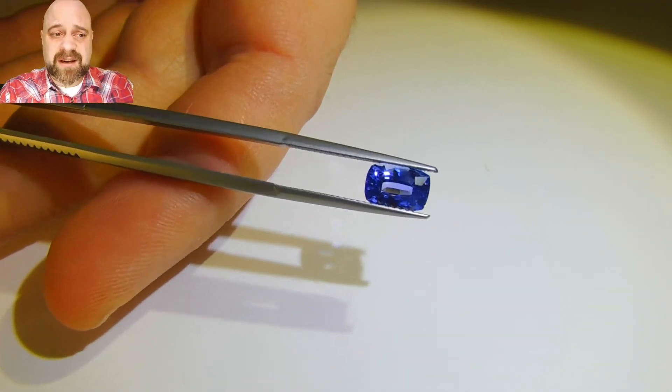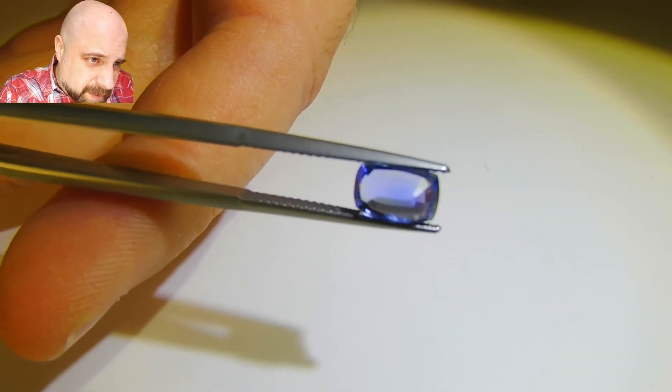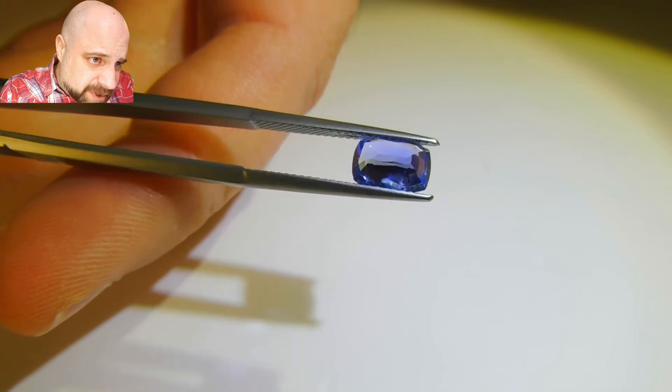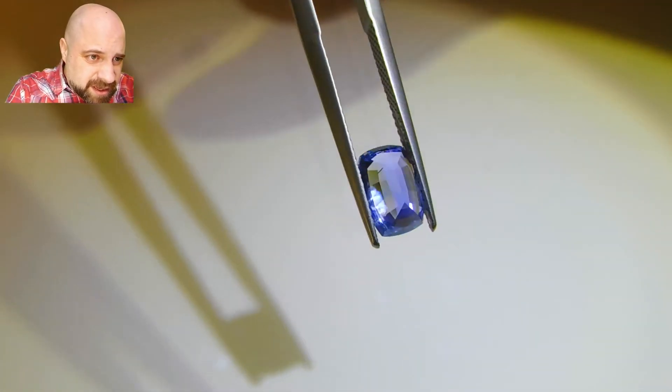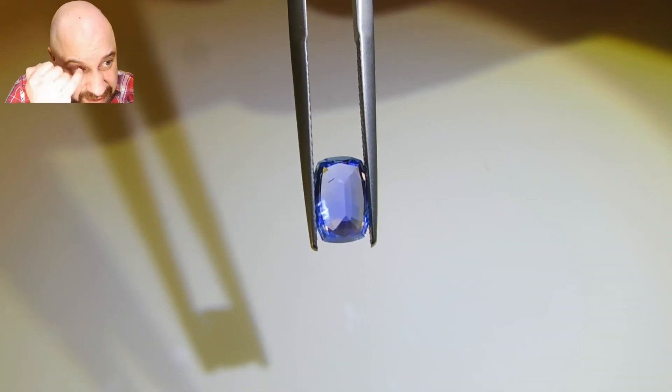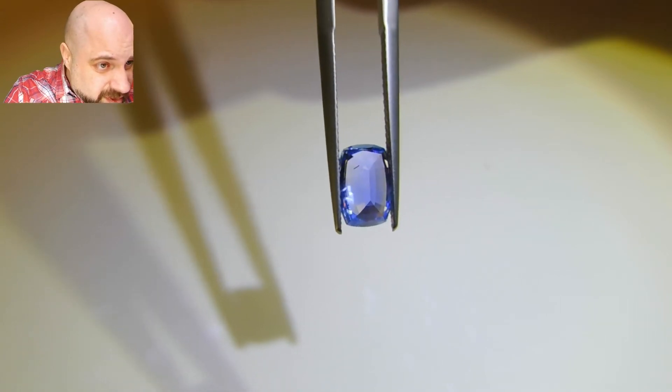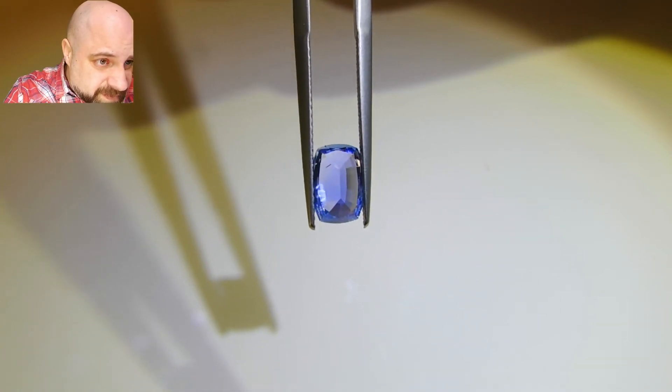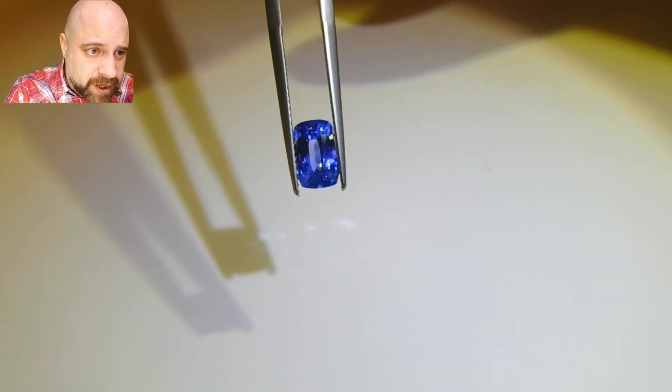Super clean, as you can see here, I'll turn it around. From the back, there is a little bit of eye visible inclusions. I don't know if I can get it to show even in here. There, you see it a little bit there at about one o'clock on the stone. From the back, from the front, the cutting is amazing and you're not seeing it from the front.